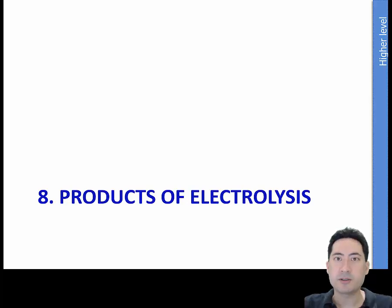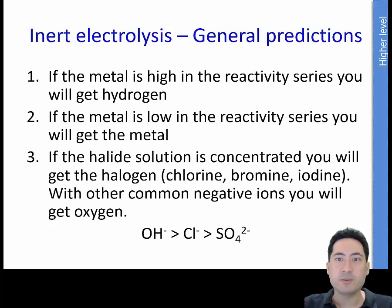Trying to determine the products of electrolysis now. We have the general predictions as we did from standard level. So this is just a quick review. If it's high in the reactivity series you're not likely to get it. So you might get water, hydrogen from water. If it's low in the reactivity series you're most likely to get it. Polyatomic ions don't like to react so you're most likely to get oxygen from the water. And if it's halide solutions you'll only get them if it's concentrated enough.